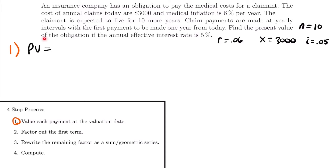When calculating the present value, we're looking for the value of these payments at time equals zero — the value today. If the first payment is made one year from today, that first payment of $3,000 is one year out, so we need to multiply it by the present value factor V. Also notice the problem says annual claims today are $3,000, but since the first payment is made one year from today, that $3,000 will be 6% greater. So we first multiply by 1.06 and then by the present value factor V.